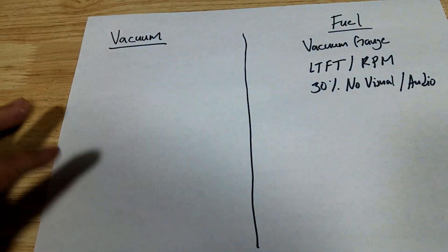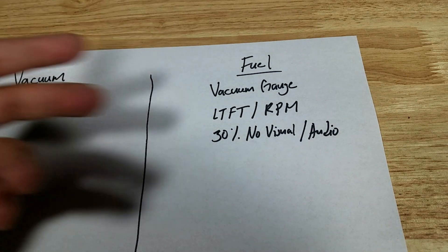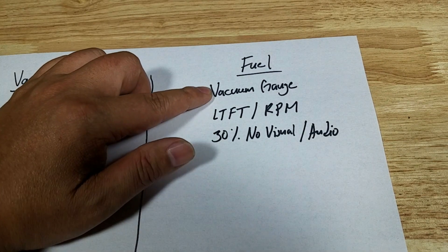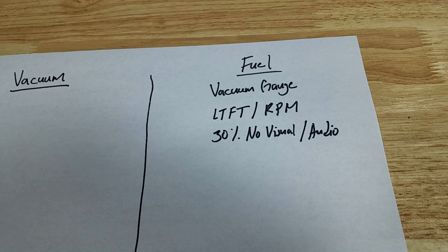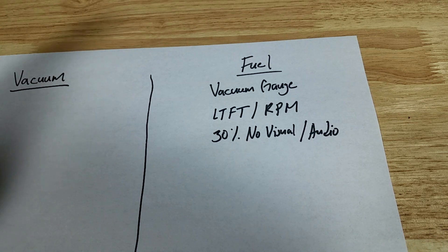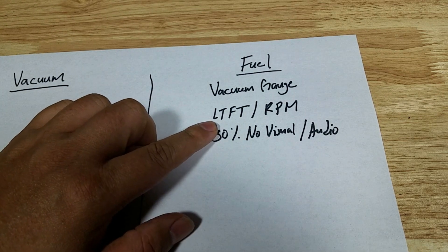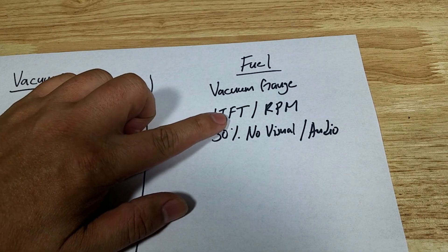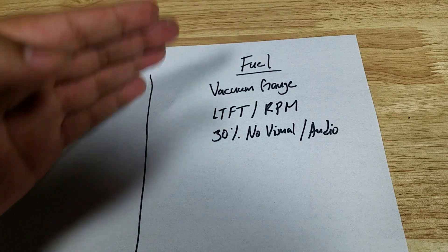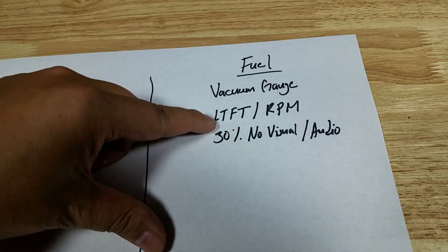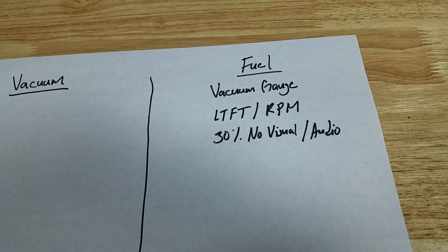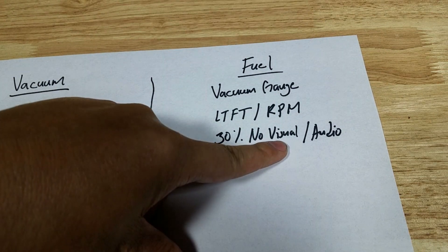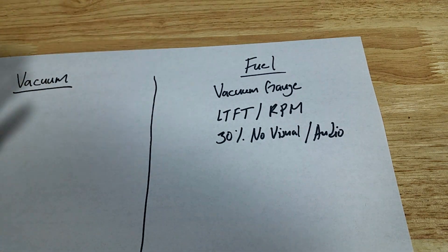Here is the scorecard so far. On the vacuum leak side, not much evidence. On the fuel delivery side, quite a bit. The vacuum gauge test showed a strong 17 to 19 inches of mercury holding steady — implying no vacuum leak, no leak down at all. Then on the OBD2 scanner graphs, the long-term fuel trim went up when we increased RPMs, not down — reinforcing the vacuum gauge test. And there's no visual or audio proof of 30% leakage on any hoses or gaskets. So I think I'm going to start my troubleshooting on the fuel side.